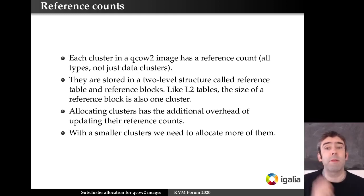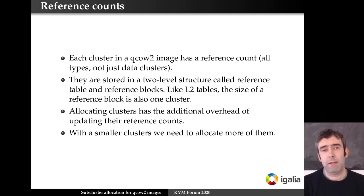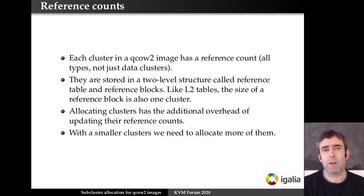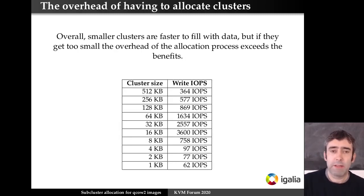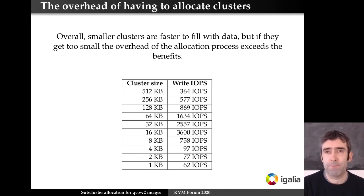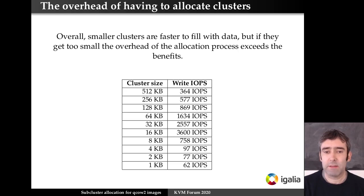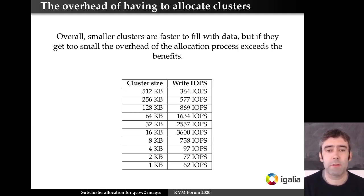Then there are the reference counts. Every cluster in a QCow2 image has a reference count — all types of clusters, not just data clusters. These are used for snapshots, because you need to know who is using each cluster. They are stored in a two-level structure called reference table and reference block, very similar to the L1 and L2 tables. Allocating new clusters has additional overhead because you need to update the reference counts. With smaller clusters we need to allocate more of them, more L2 tables, and more reference blocks. Although normally reducing the cluster size increases performance because there's less copy-on-write, once we go under a certain limit — in this example less than 16k — the performance goes down very quickly. The performance with 4k clusters is very bad, even though with 4k clusters there is no copy-on-write, because we have to allocate so many clusters, L2 tables, and reference blocks.